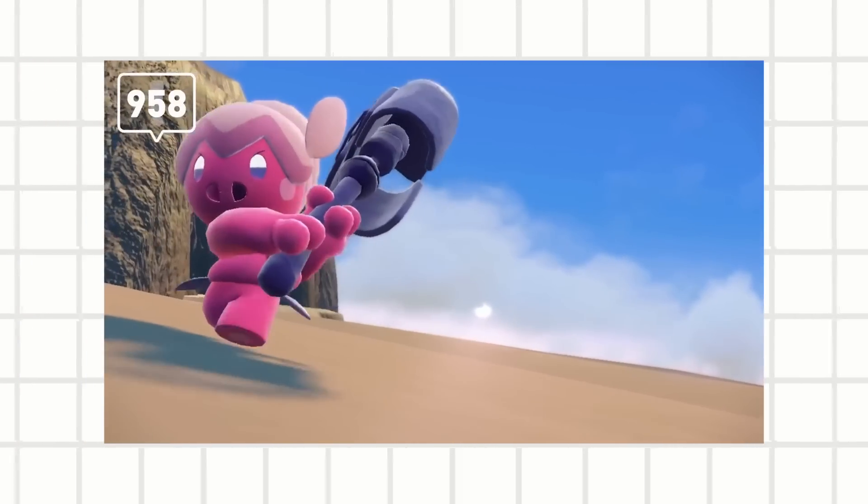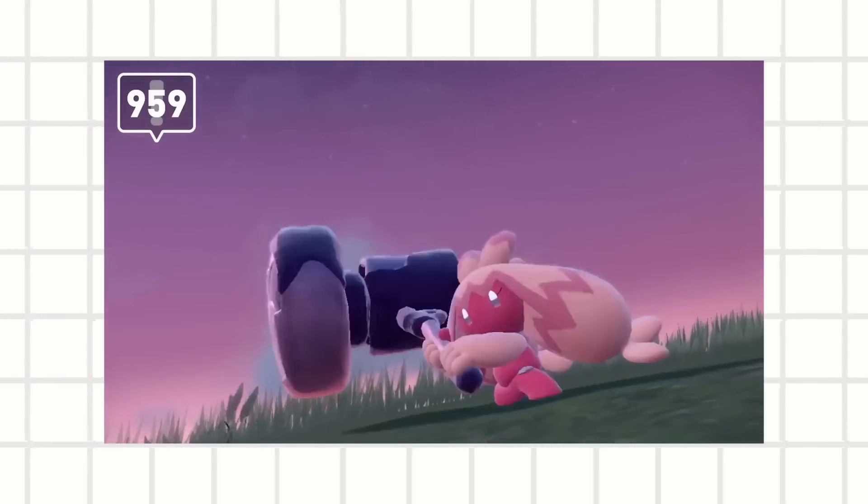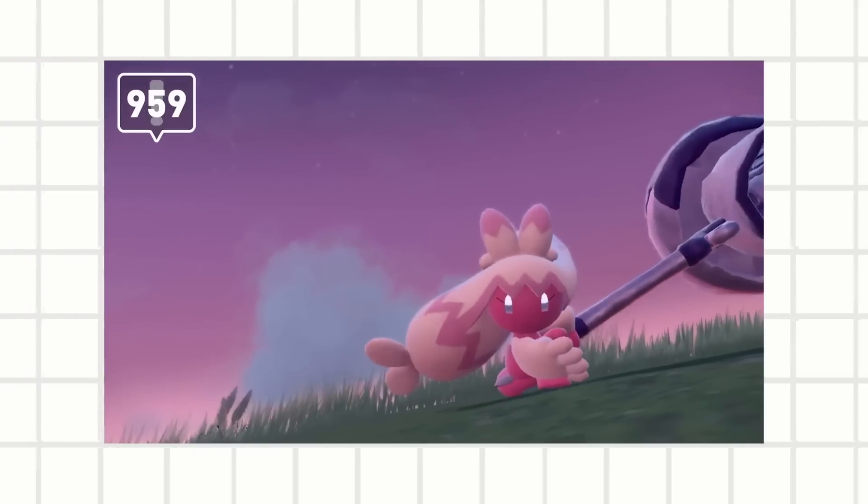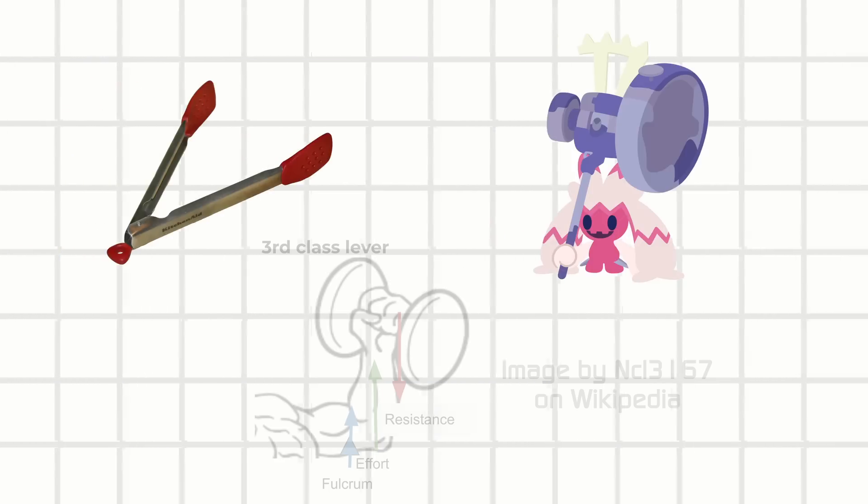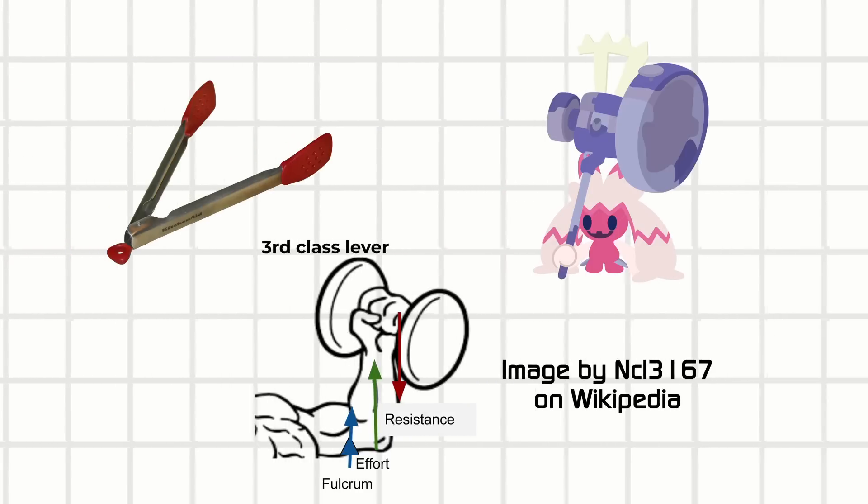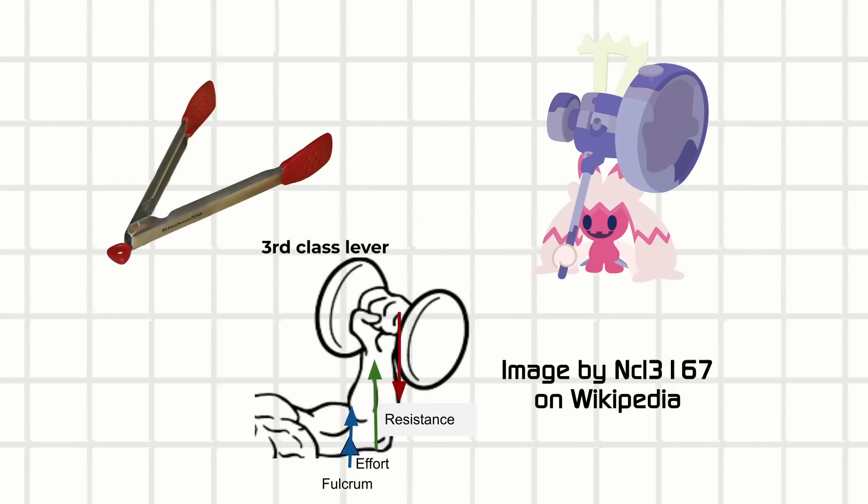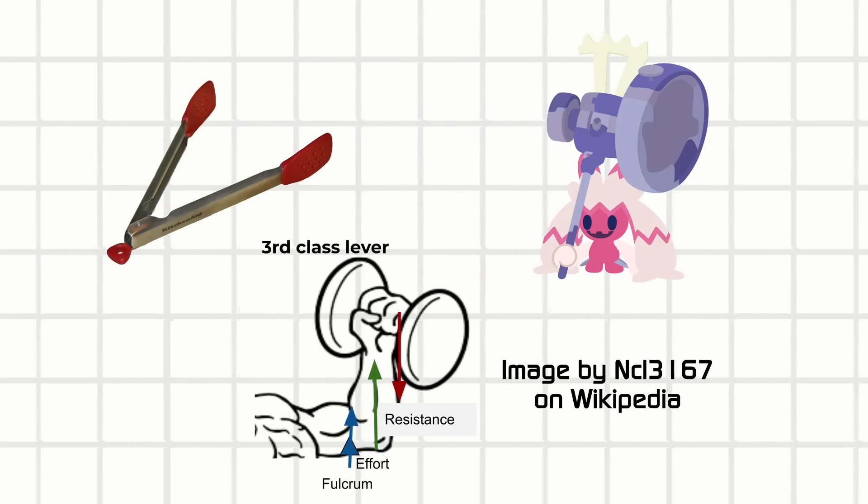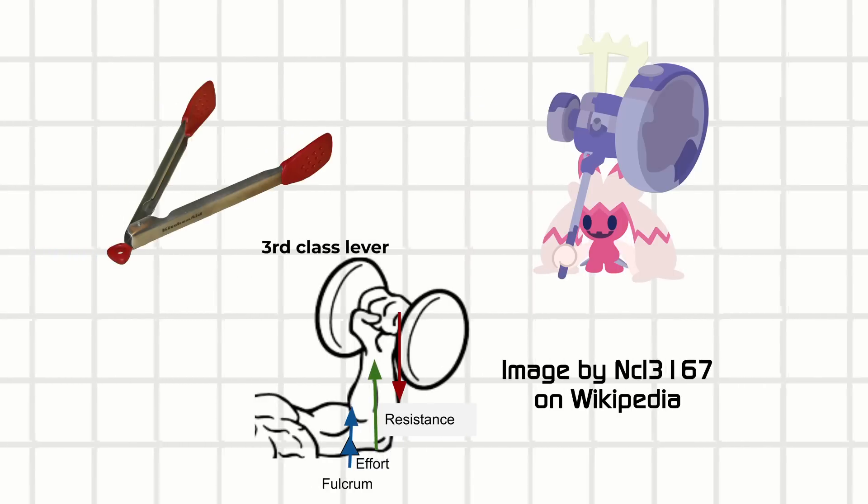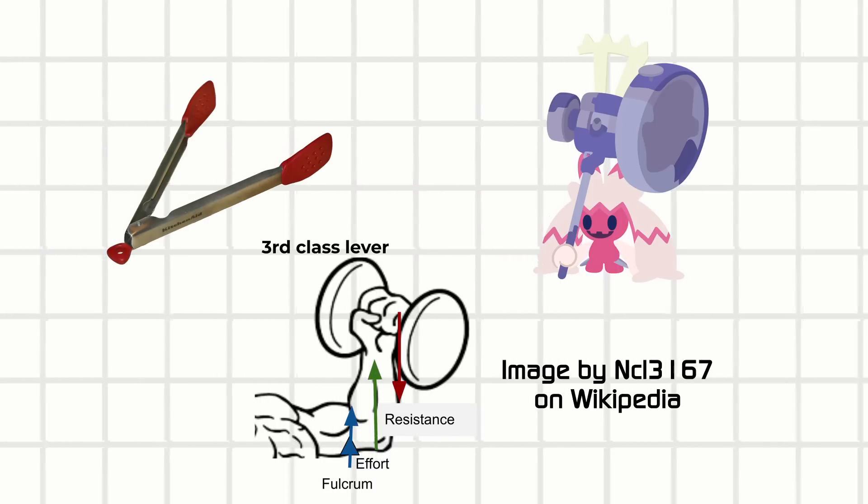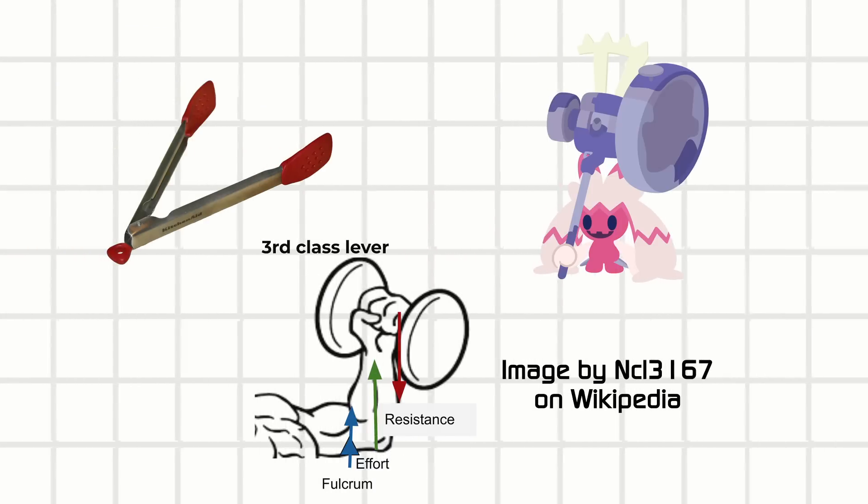For example, despite class 3 having less than one mechanical advantage, that's how tongs, hammers, and even your arm muscles are organized so that you can lift stuff with your hands. The load has to be on the other side, and sometimes you can't have the pivot point in the middle all the time. Sometimes you need those different classes of levers, depending on the problem you're facing.